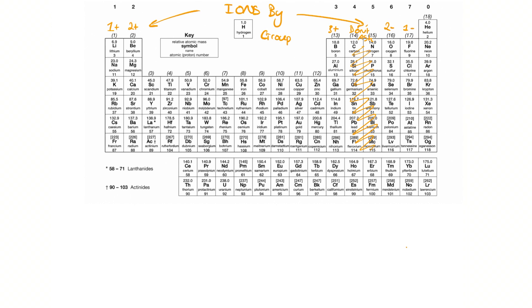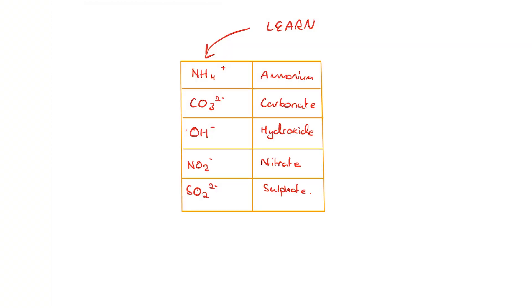Now, although you can use the best invention in all of human history to identify ions formed from atoms, there's a few compound ions you need to learn. It may be useful to copy this table out and put it on an Anki flashcard. You need to know the ammonium ion is one-plus charged, carbonate ion is two-minus charged, hydroxide ion is one-minus charged, a nitrate is one-minus, and a sulfate is two-minus charged.